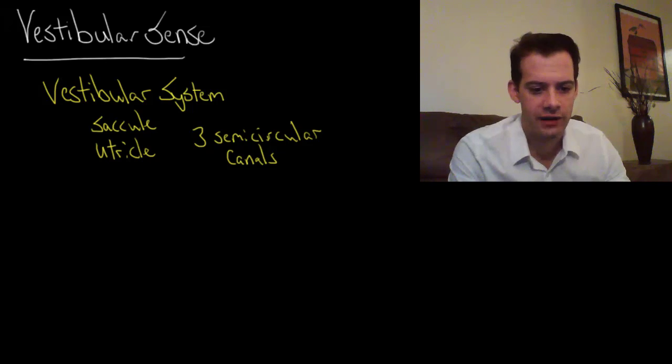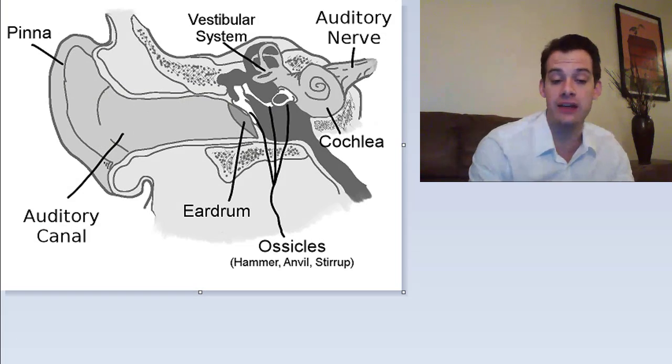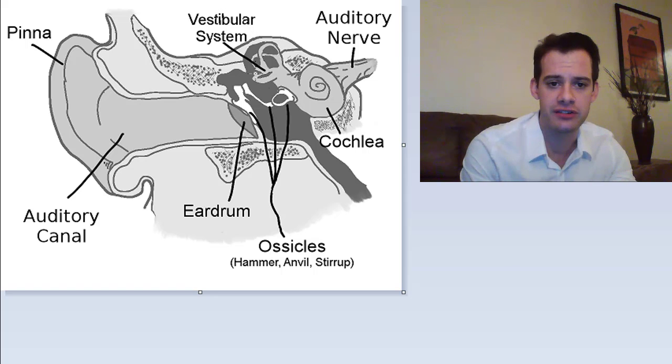Let's take a look at the inner ear. This is the picture we saw in the last video. The vestibular system is located here, just above the cochlea.